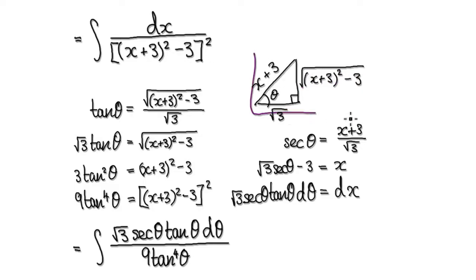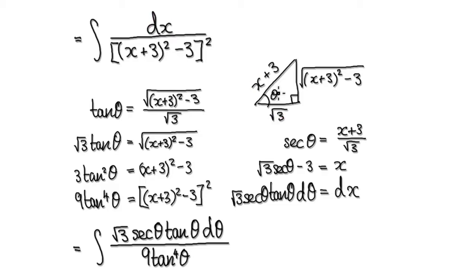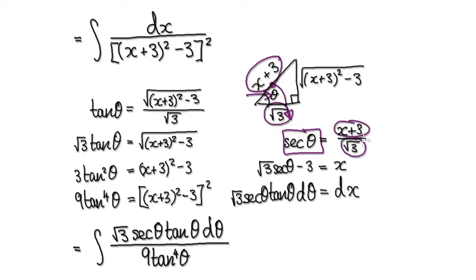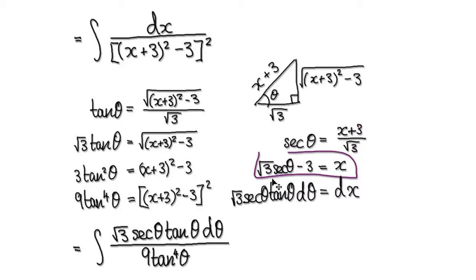Looking at the triangle, we need to extract the dx. This here is secant — secant of the angle equals hypotenuse over adjacent. So times both sides by root 3, and then take away 3 from both sides, that will then give you this. And then from this, differentiate both sides, so dx equals this thing here.